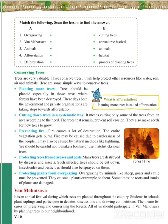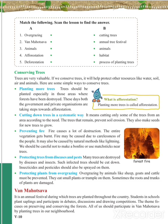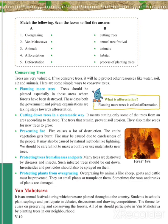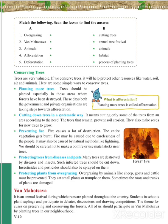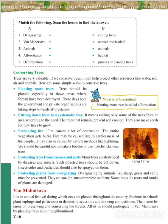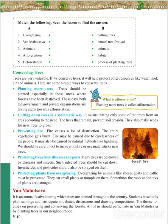Next is preventing fires. Fire causes a lot of destruction — the entire vegetation gets burnt. Fire may be caused due to the carelessness of people, for example when we visit forest areas and leave a campfire or bonfire. It may also be caused by natural methods like lightning. We cannot control lightning, but we can control human activities — we should be careful not to make a bonfire or use matches near trees.